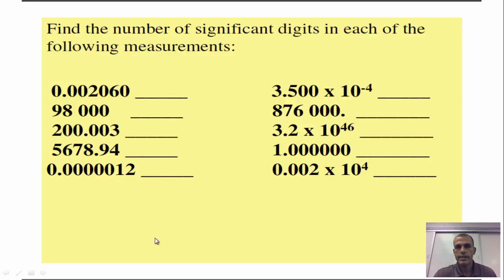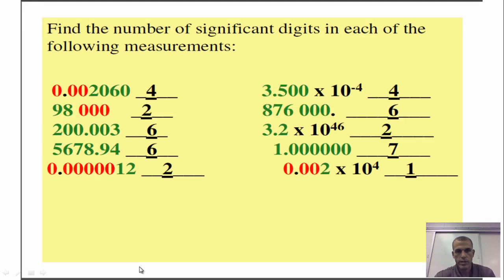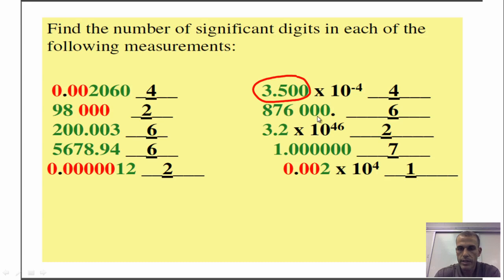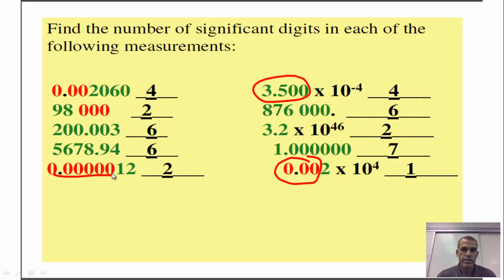Go ahead and pause this recording and answer the practice questions in your notes — they cover all the different types from the six rules we looked at. Welcome back. Everything in green are significant digits and everything in red are non-significant digits. You can see these because of the decimal points. Remember to look at the zeros carefully — that's why we only have two significant digits in some cases.